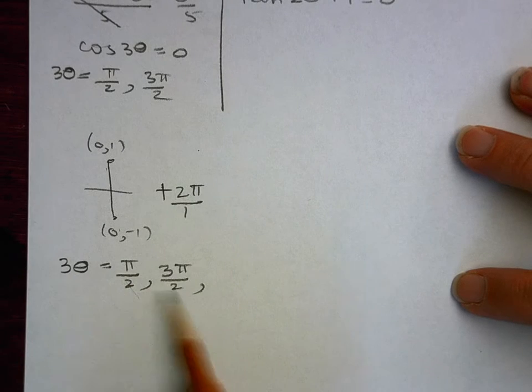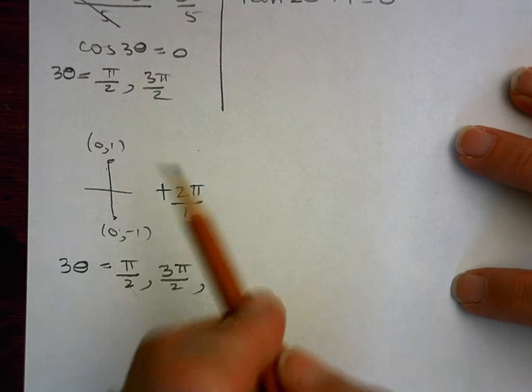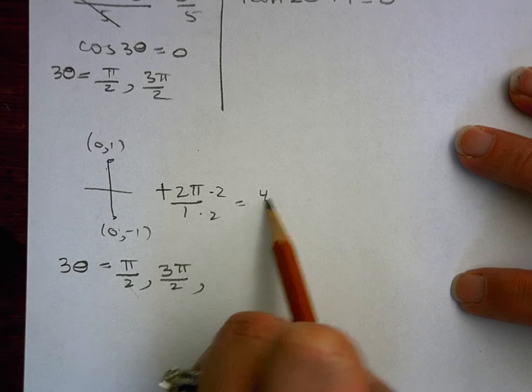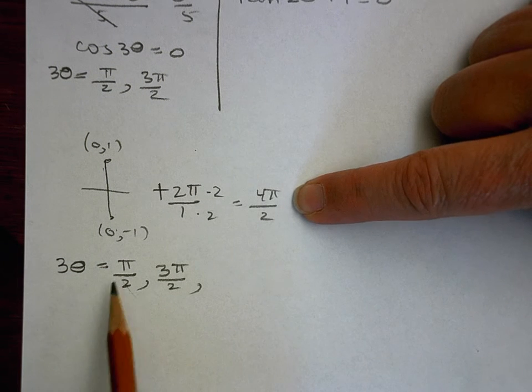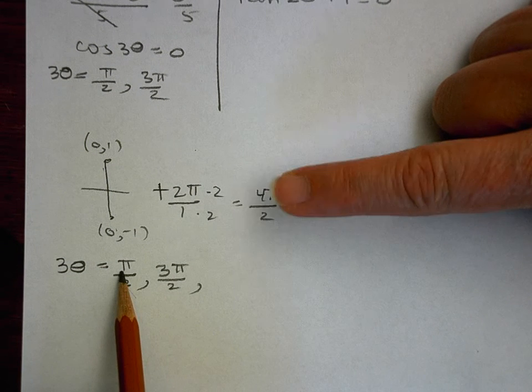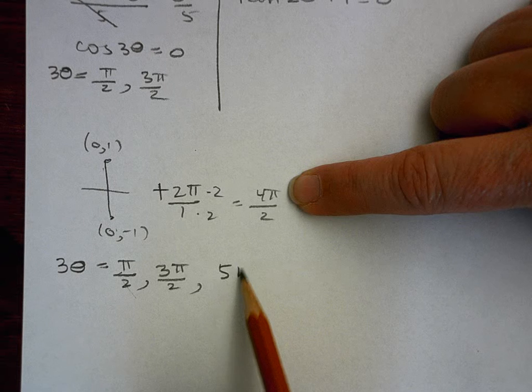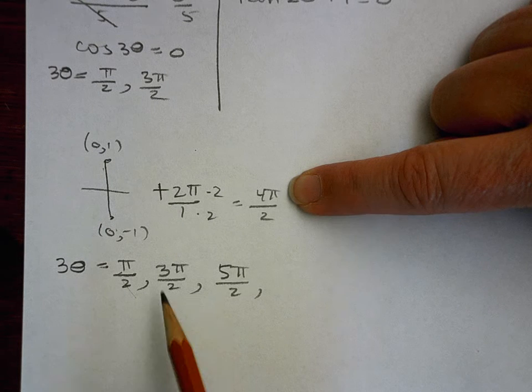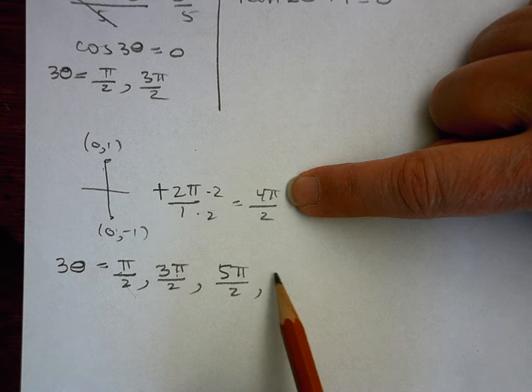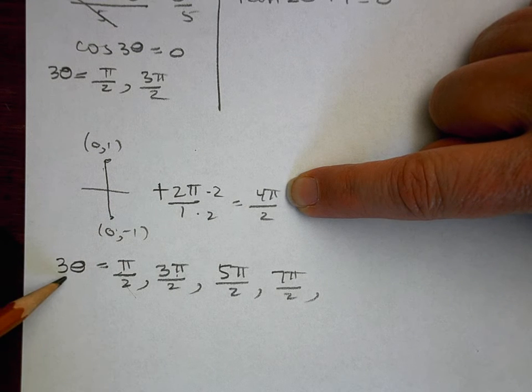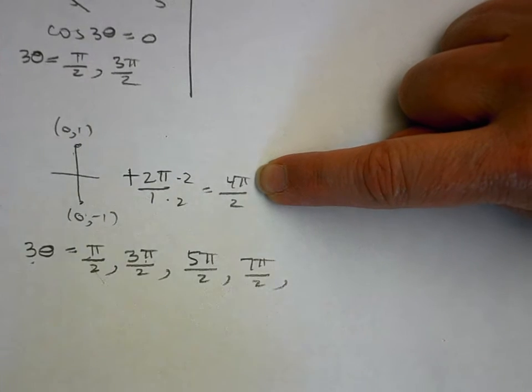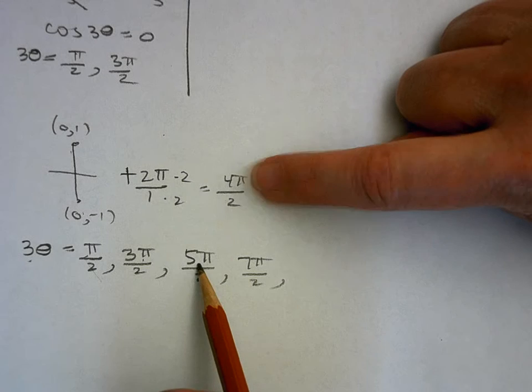So but I want it to be in terms of 2 because I want a common denominator, so I'm going to multiply by 2. So really what I'm doing is I'm adding 4 pi over 2 to everything here. So I'm going to do pi plus 4 pi, still over 2, and then 3 pi plus 4 pi, still over 2. And then I have to do it a third time because I'm going through a third rotation. So then I'm going to add 4 pi to 5 pi, and then 4 pi to 7 pi.